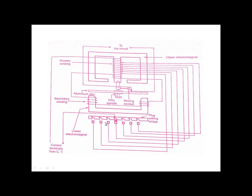The secondary winding on the center limb of the upper E-shaped magnet is connected in series with the winding on the lower U-shaped magnet. This winding is energized by induction from the primary. By this arrangement of the secondary winding, the leakage flux of the upper and lower magnets are sufficiently displaced in space and time to produce a rotational torque on the aluminum disc. The control torque is provided by the spiral spring.